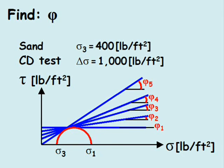However, if we had a second set of data, we could plot it on the same graph, draw the rupture line, and be certain of its slope and hence its friction angle.